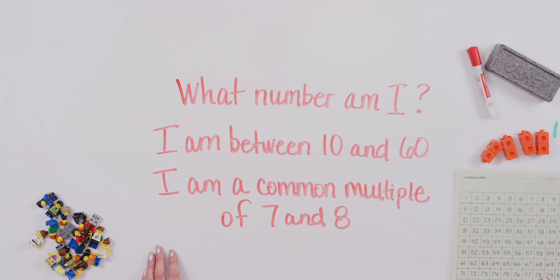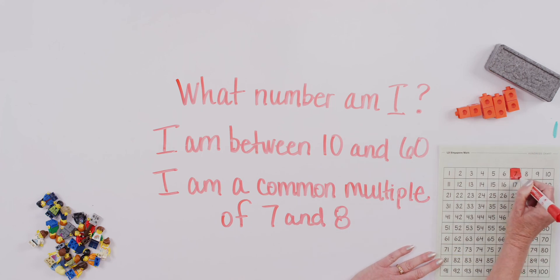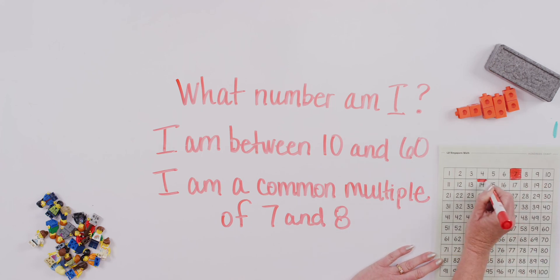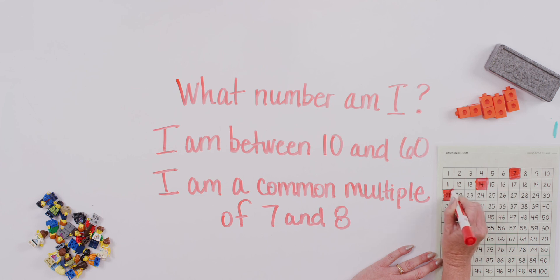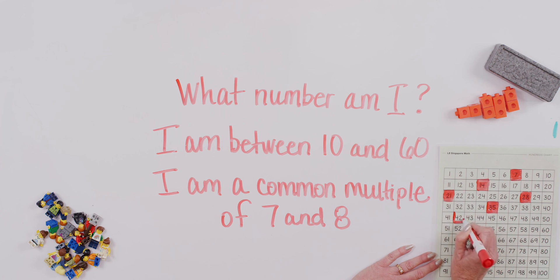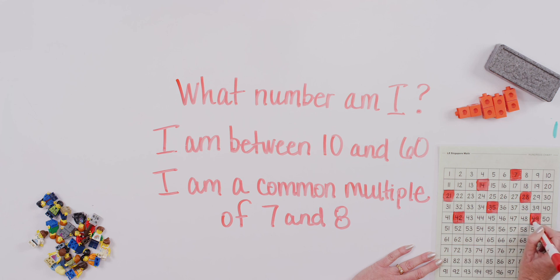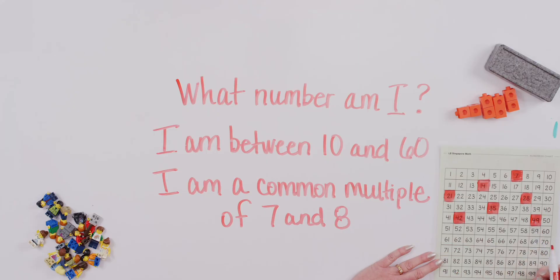You may have your 100 number chart handy and it may be a good idea to grab it. Let's start with 7. 7, 14, 21. 7 times 1, 7 times 2, 7 times 3, 7 times 4 is 28. What's 7 times 5? 35, 7 times 6. How about 7 times 7? Should we keep going? It says up to 60. Let's do one more. 7 times 8, 56.